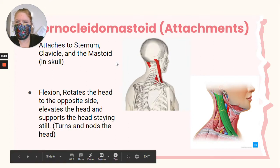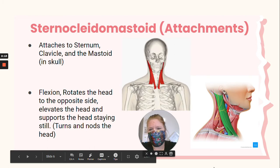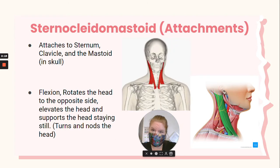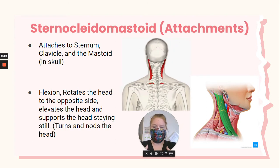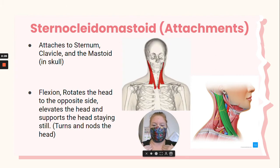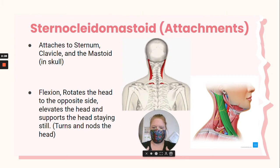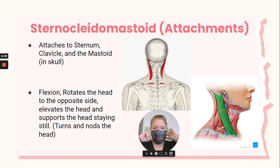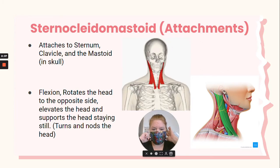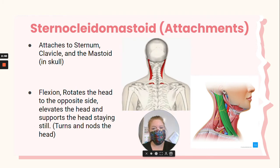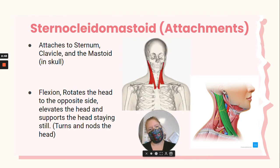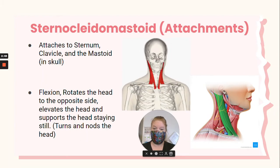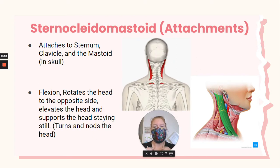Now we have the sternocleidomastoid — just one of my favorite muscles. What a fantastic name. The sternocleidomastoid is named for its attachment points. It attaches to the sternum, it attaches to the clavicle — that's the cleido part — and the mastoid, which is the mastoid process, a little part that sticks out from the temporal bone of your skull. The sternocleidomastoid is responsible for flexion and rotation of the head to the opposite side, and it elevates and supports the head so you can turn and nod.